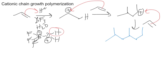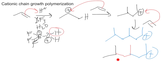If you want to look at these and see where each of the separate propenes are, you can take that same drawing. You've got a positive charge at the end, and you can see here's the first set of three carbons, here's my second set of three carbons, here's my third set of three carbons. As this keeps going it keeps growing, and you can see each of the monomer units that were used to make up the new polymer.